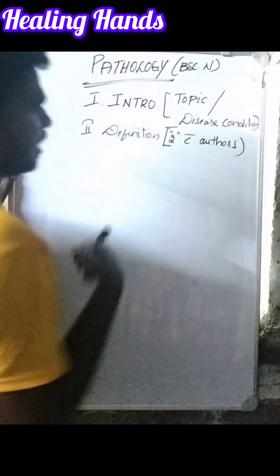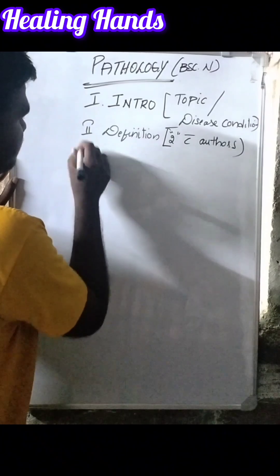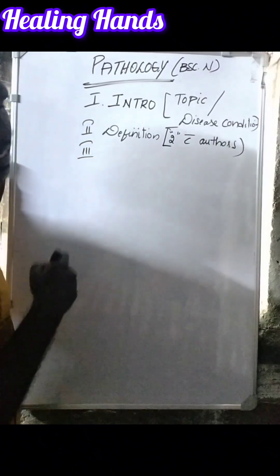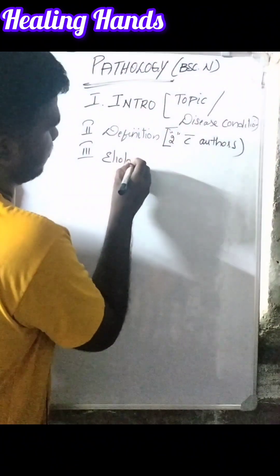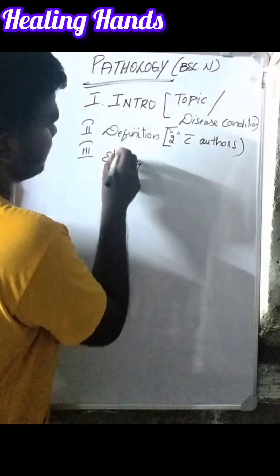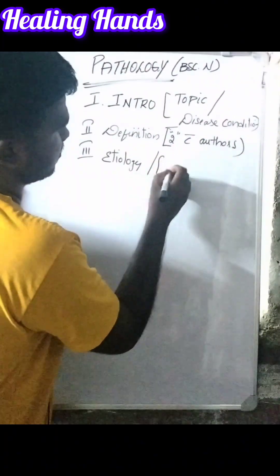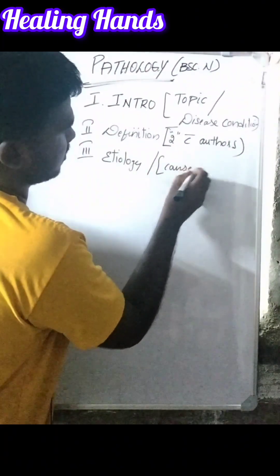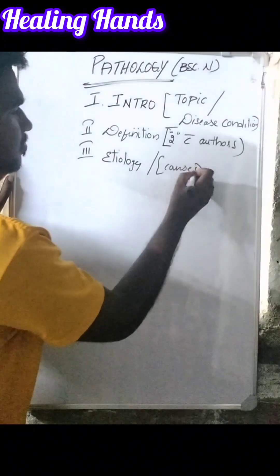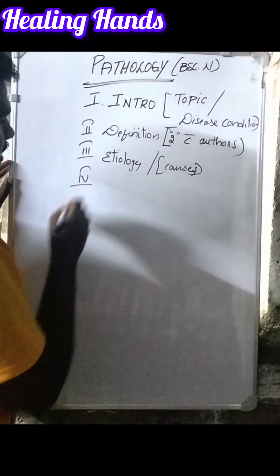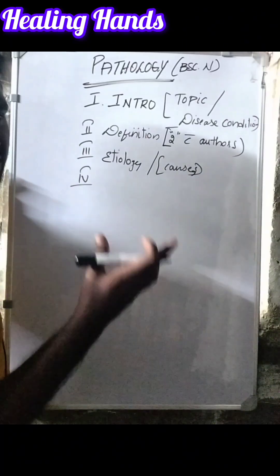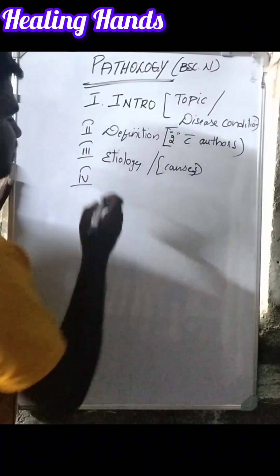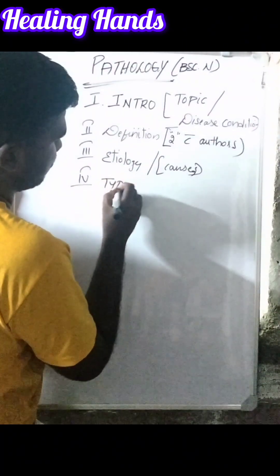Next we should write the etiology. Etiology means the causes of the disease condition. Next, we should write the types — if there are any types of the disease condition we should write them; if there are no types, there is no need to write types.